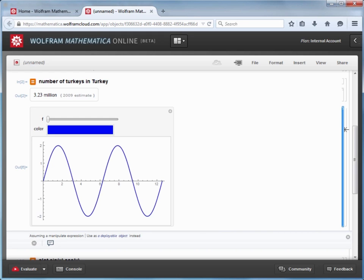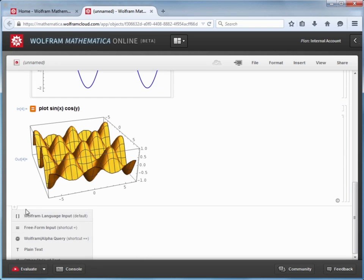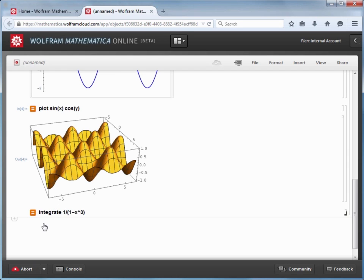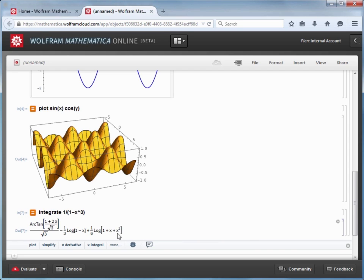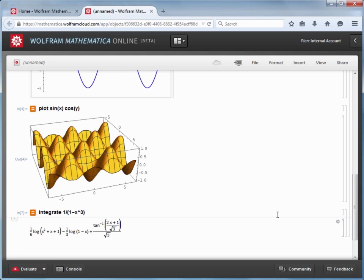I'm going to create a new cell, let's use freeform input again, and we'll integrate 1 over quantity 1 minus X cubed. Now, when I do that, I get a result that has some degree of typesetting displayed. I can even select the output cell bracket, click on the little gear icon, and then choose Convert to traditional form to see the result that is more like mathematics you might see in a textbook.